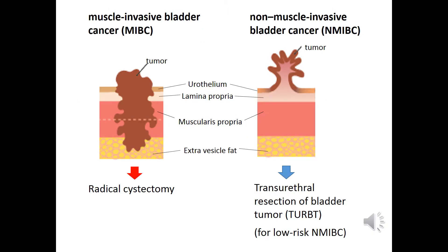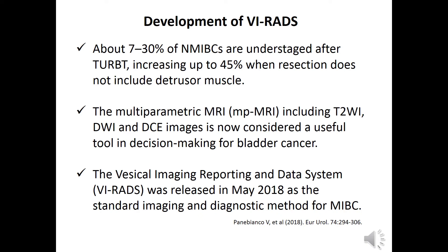As you know, the cornerstone of the diagnostic algorithm for bladder cancer is distinguishing non-muscle invasive BC from muscle invasive BC, which can be performed by histopathological analysis of TUR specimens. However, about 7-30% of NMIBCs are understaged after TURBT, increasing up to 45% when resection does not include muscularis propria.